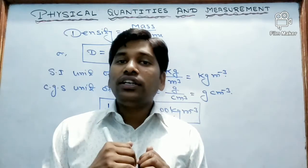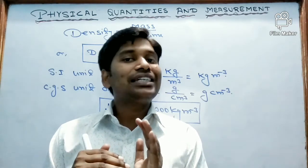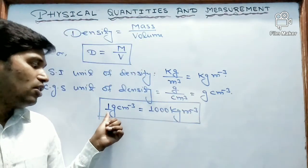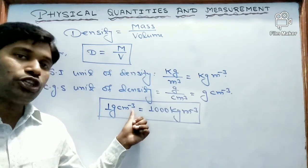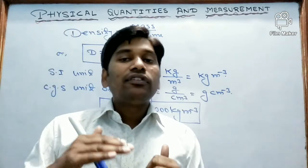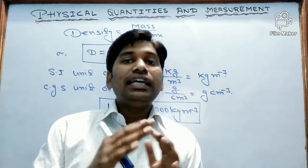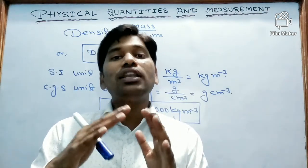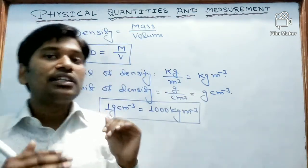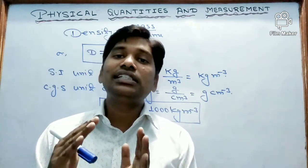The density of water is maximum at a temperature of 3.98 degrees Celsius — that is, at 4 degrees Celsius — the density of water is 1 gram per centimeter cube or 1000 kg per meter cube. If the water is cooled from 4 degrees Celsius to 0 degrees Celsius, it expands, showing unusual behavior. As it expands, its density will decrease. So the density of water is maximum at 3.98 degrees Celsius.